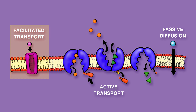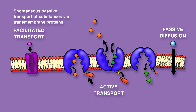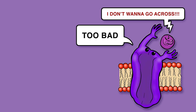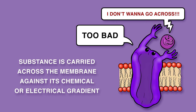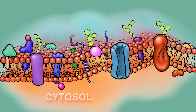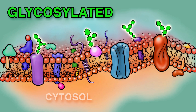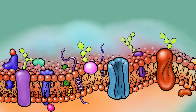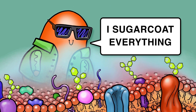Transmembrane proteins may participate in facilitated or active transport. Facilitated transport is spontaneous, passive transport of substances via transmembrane proteins. Active transport, however, requires energy — for instance, if a substance is being carried across the membrane against its chemical or electrical gradient. As a final note, in animal cells most transmembrane proteins are glycosylated. These sugar residues are always present on the non-cytosolic leaflet of the membrane. As a result, the cell surface is covered in carbohydrates, which form what's called the cell coat.